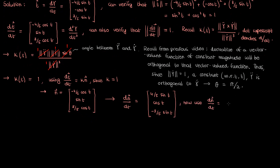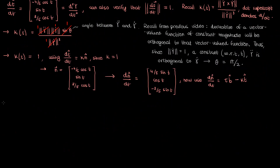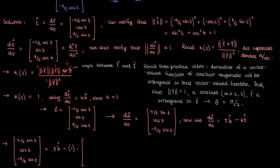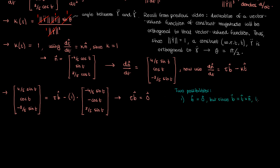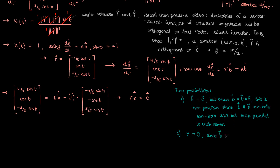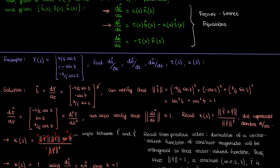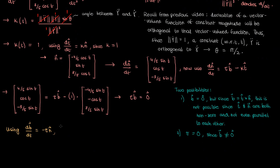This brings in the second Frenet-Serret equation. We know dn/ds equals tau times b minus kappa times t. We already have the normal vector, so what we're really extracting from this equation is the tau times b term. Plugging in the derivative of the normal vector, kappa, and the tangent vector, we isolate the tau times b term and get the zero vector. This leaves two possibilities: either b is zero — impossible since t and n are perpendicular, not parallel — or the torsion tau is zero. The torsion is indeed zero, and by the third Frenet-Serret equation, this means the rate of change of the binormal vector is also zero.